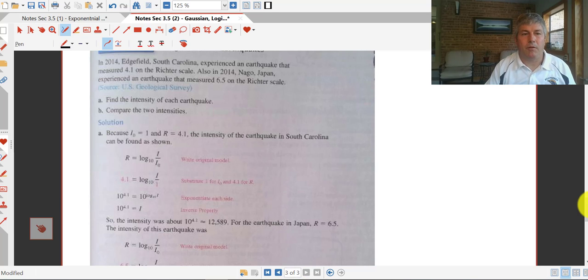So let's take a look at a couple of earthquakes. In South Carolina, there was an earthquake that measured 4.1 on the Richter scale. And in Nago, Japan, they experienced one that measured 6.5 on the Richter scale. So find the intensity of each earthquake.